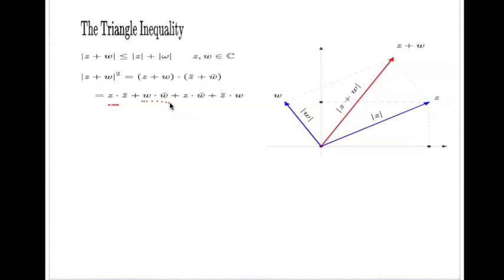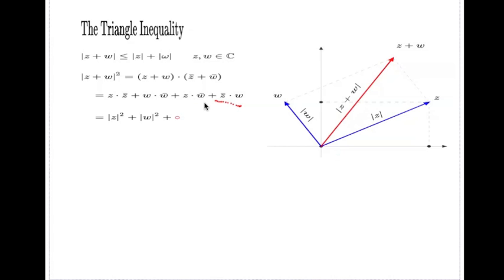When you look at this expansion, you can identify |z|² and |w|² separately. For the two mixed terms, if you look closely you'll realize that one is the complex conjugate of the other. When we add a complex number with its complex conjugate, the result is two times the real part — so those two terms combine to give 2·Re(z·w̄).